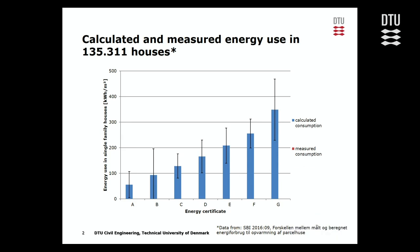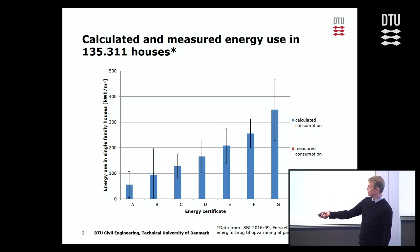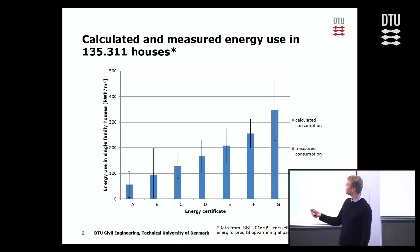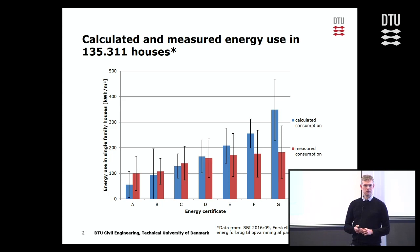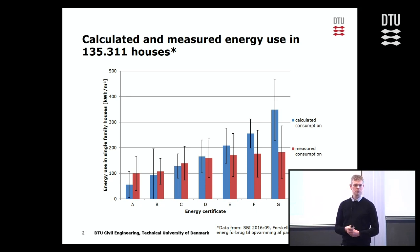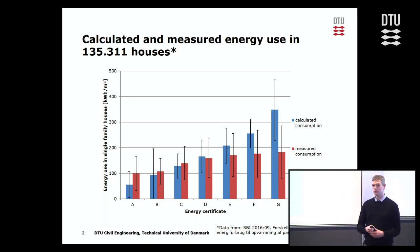This is data from a report from the Danish Building Research Institute. They compared 135,000 energy certificates in Danish houses. Here we have the energy certificates and the energy use - the calculated consumption shown in blue. What's interesting is to compare with the measured consumption. If you live in an energy efficient house, you actually spend twice as much on average as the energy certificate states. But if you live in an energy inefficient house, you spend only half of what the energy certificate states.